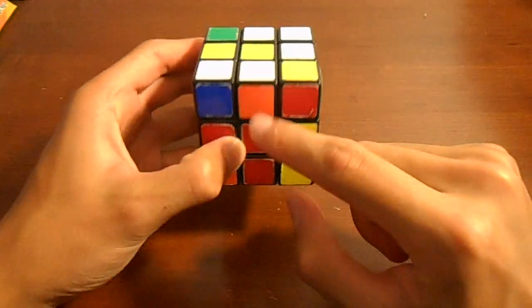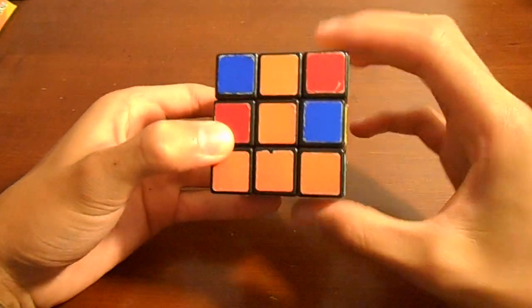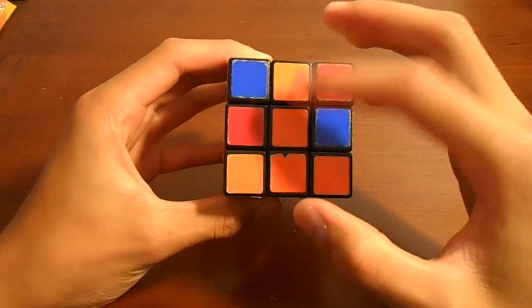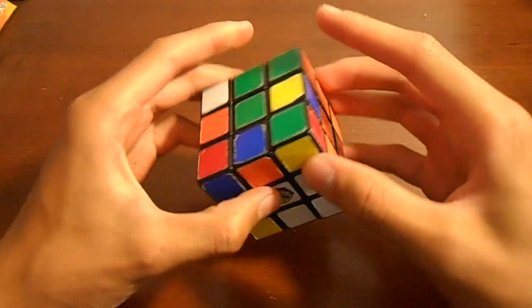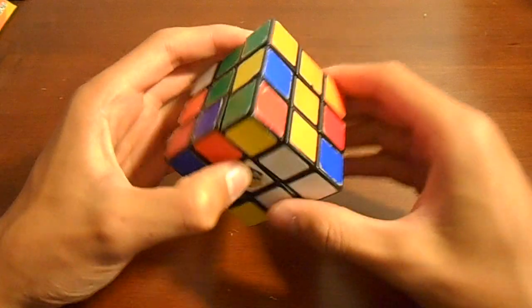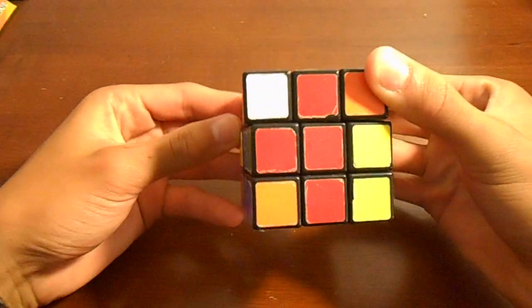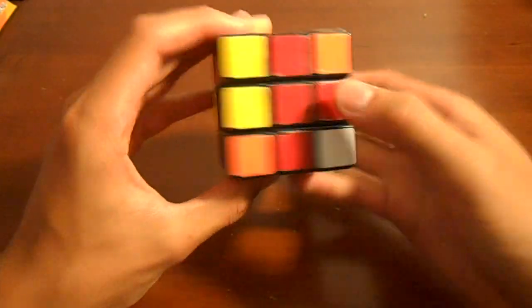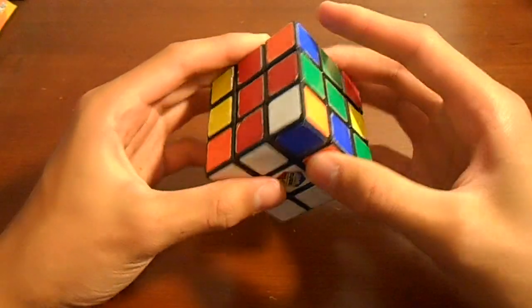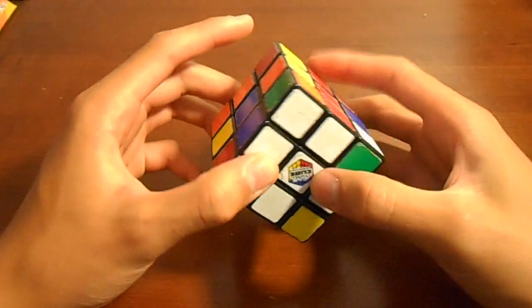And then just find the next piece. Do it again like this. And then since now it's matched up, spin the front. Once again that's just bringing that piece down like that. And then find the next one. Match it up. So there it is. It's again bringing it down. And then last piece is already matched up. Bring it down. And then we have the cross completed.